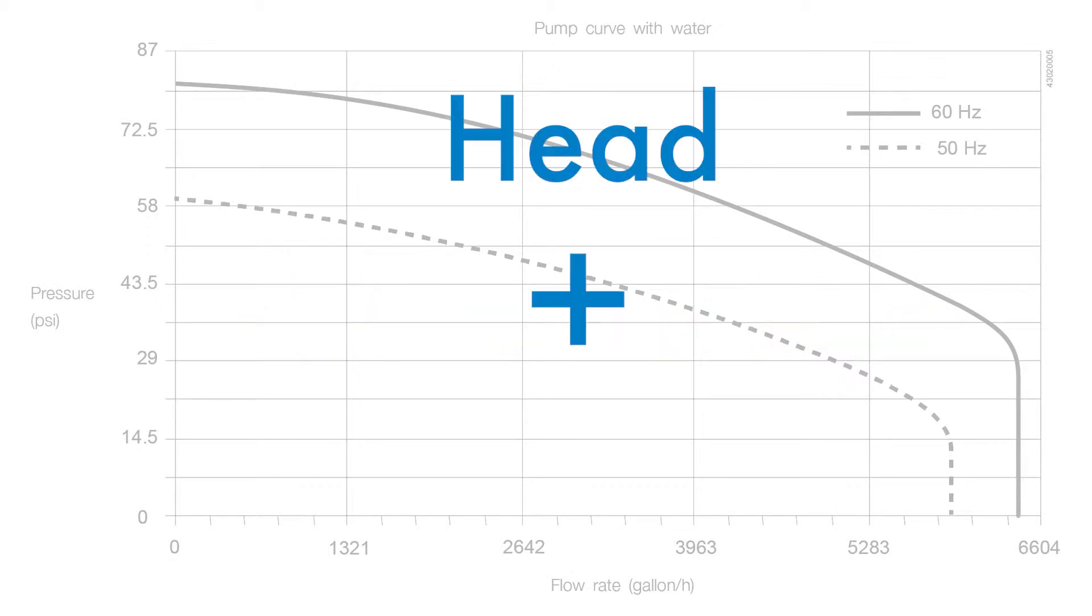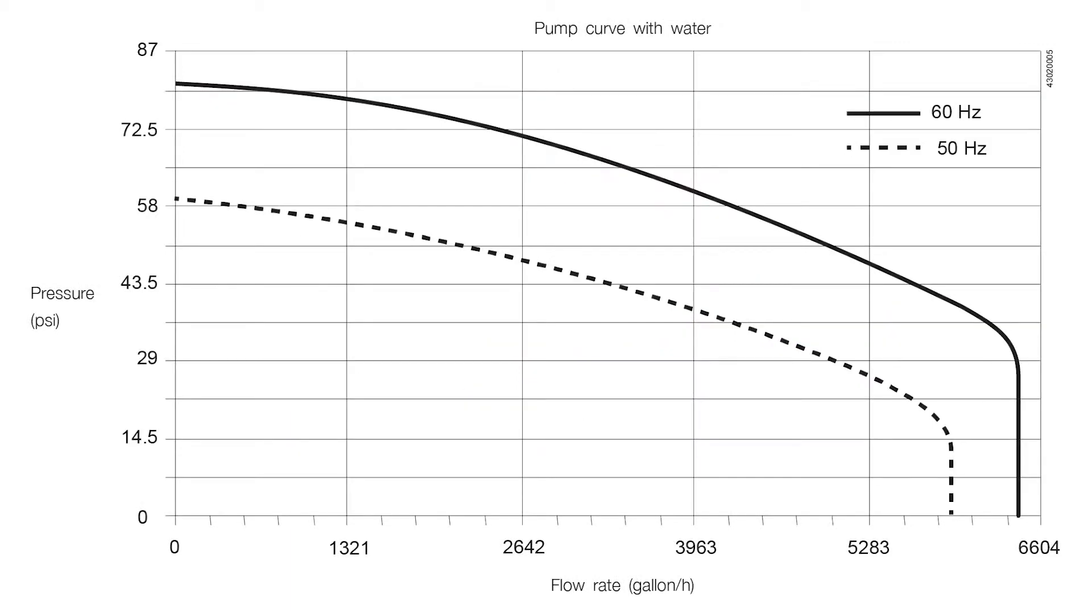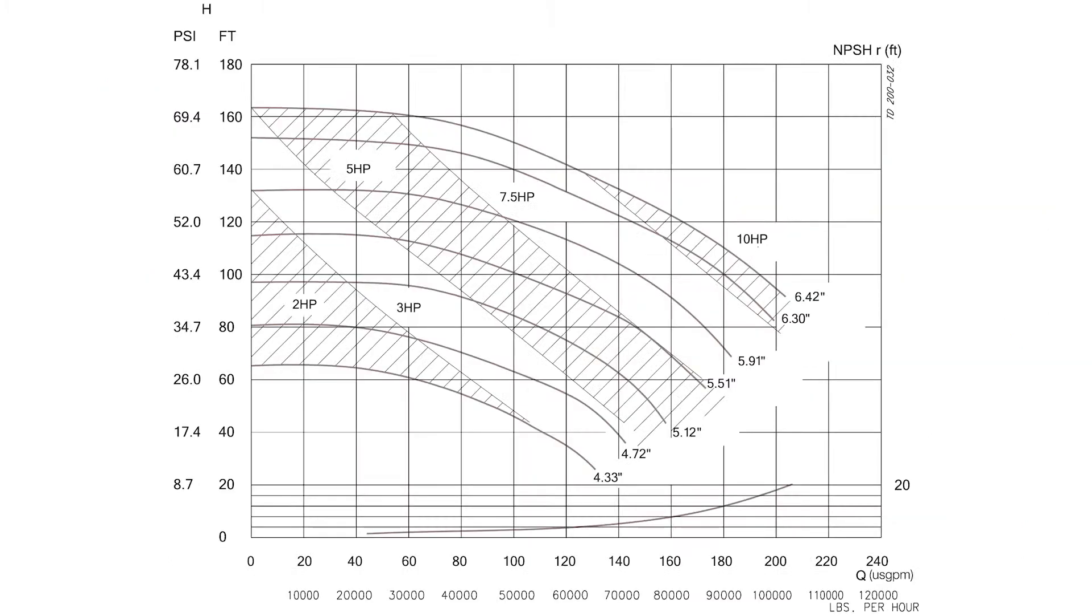Now, let's put our head and flow together. Let's say you want to know the flow rate to expect from a pump at 60 hertz when the pressure is 80 psi. In this example, the flow rate is 1,321 gallons per hour. Because some pumps can operate at a range of horsepower, curves may include additional information to account for the range of a pump's performance.